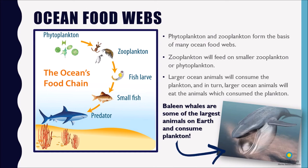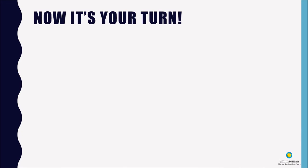So some of the largest animals on earth are eating some of the smallest organisms on earth. All right, so now that we know a little bit about plankton it is your turn to get started on our activity. The plankton matching activity is going to ask you to match plankton larvae to its adult form.